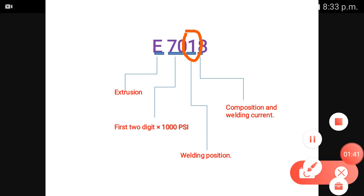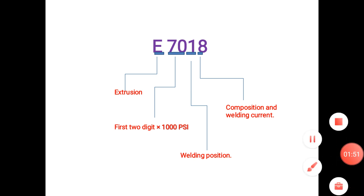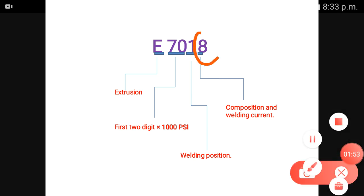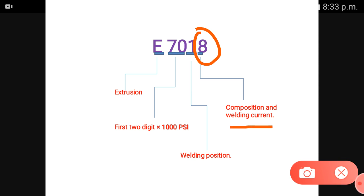What does the next digit indicate? If you have a welding position, that is indicated by the third digit. If there is a fourth digit, that indicates the composition and welding current.